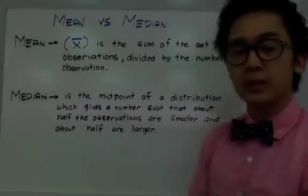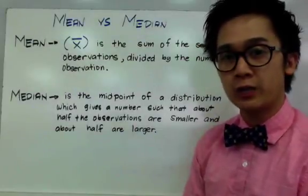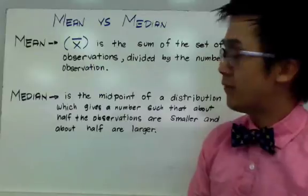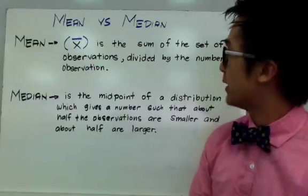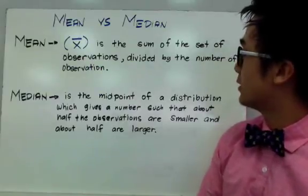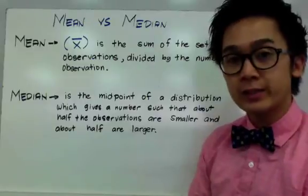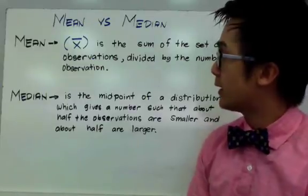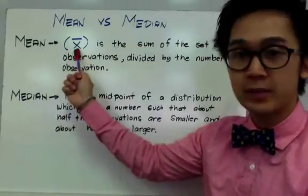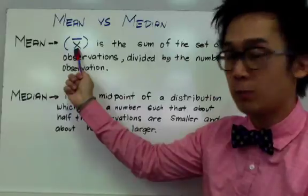The mean and the median are the two measures of center. By definition, the mean is the sum of the set of observations divided by the number of observations. In statistics, the mean is usually denoted by this symbol right here, which is our x-bar.